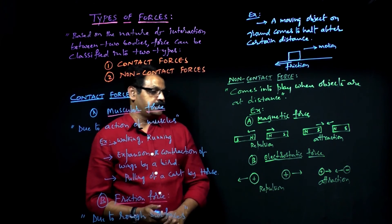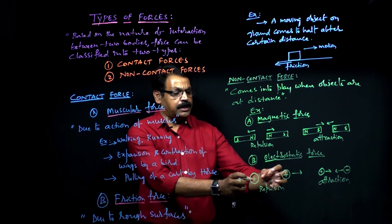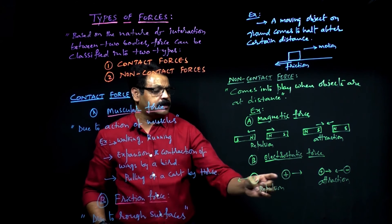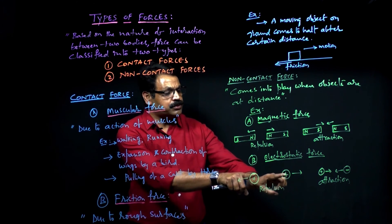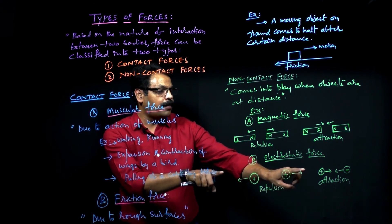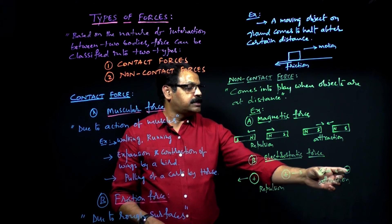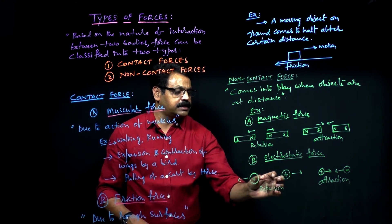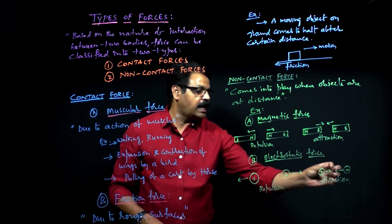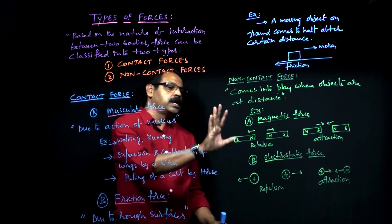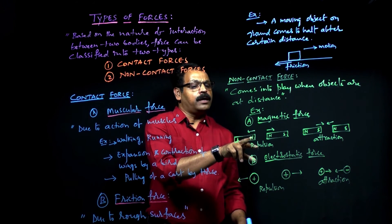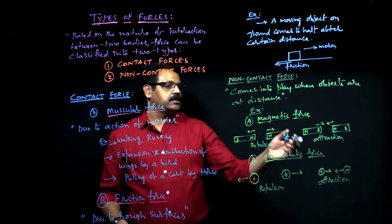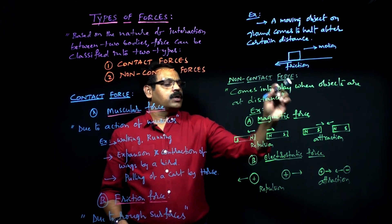Coming to electrical forces: when charges are at rest and similar charges are placed nearby at a certain distance apart, there exists a repulsion, because similar charges repel. These two charges try to move apart. Whereas if you keep opposite charges — one positive and one negative — they try to attract each other. So here there exists a repulsive force, and here there exists an attractive force. In all these cases, the bodies are not in contact. That is the reason magnetic force and electrostatic force come under non-contact forces.